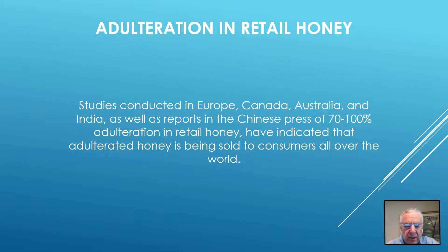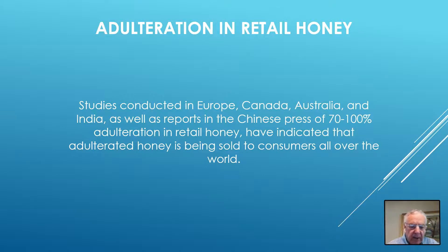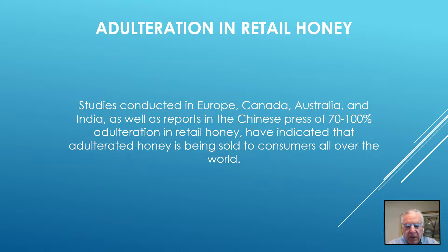The adulteration in Europe, Canada, Australia, and India, as well as numerous reports in the Chinese press, have indicated that adulterated honey is being sold to consumers all over the world. In the United States, anti-dumping duties resulted in a number of prosecutions charging honey importers with criminal activity and collusion of packers and exporters, creating what was called Honeygate — described as the largest example of food fraud in the history of the United States.